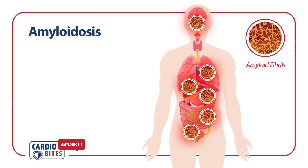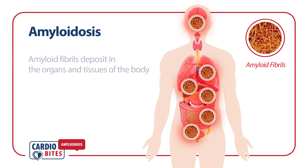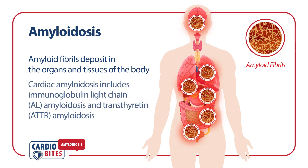In summary, amyloidosis is a rare disorder caused by the accumulation of amyloid fibrils that can affect any part of the body. There are two types of amyloidosis that commonly present with cardiac complications: immunoglobulin light chain amyloidosis, or AL, and trans-thyretin amyloidosis, also known as ATTR.